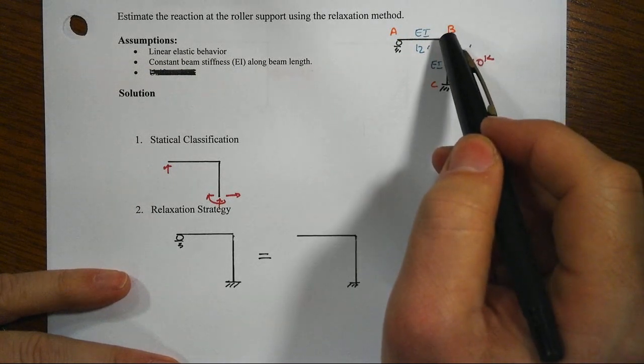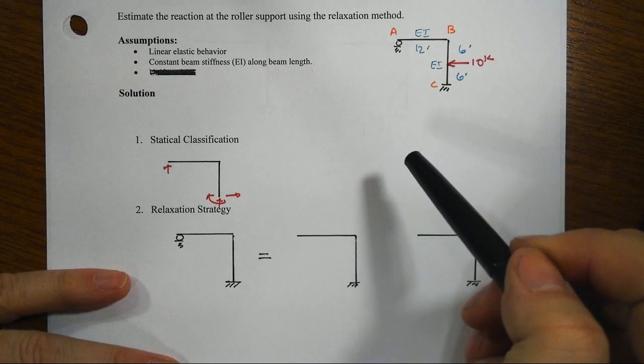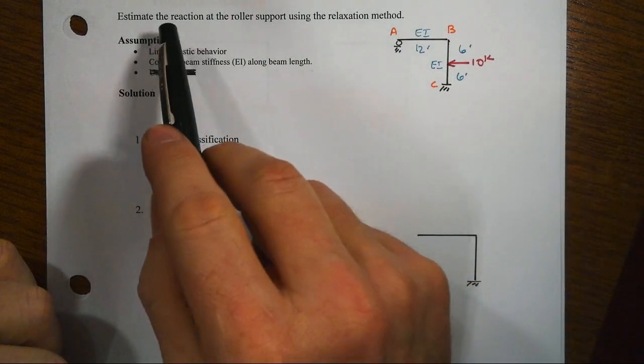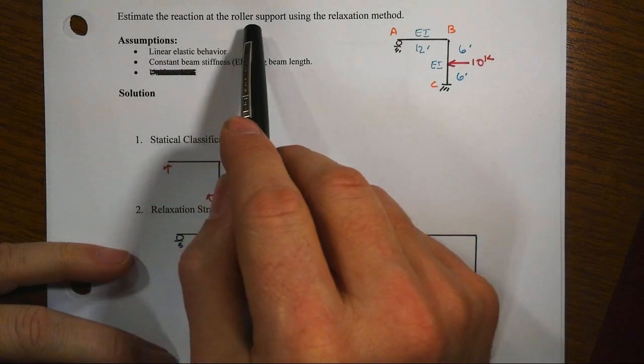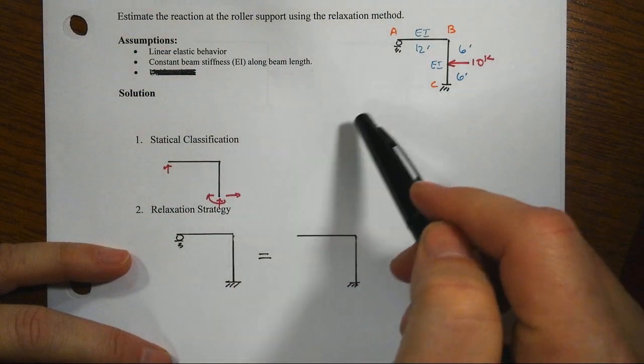Ultimately, we want to find out how much this structure sways. The problem statement says estimate the reaction at the roller support using the relaxation method, and that's all because of a strategy that we're going to employ.